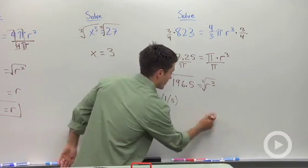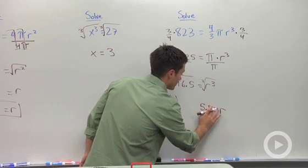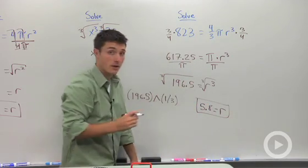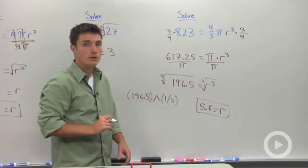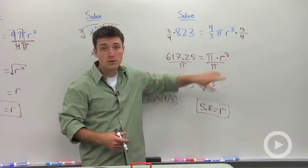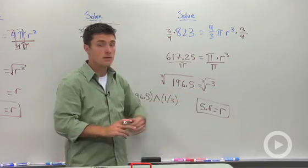So I'm going to write that a little bit over here. R is equal to 5.8. And we don't know what our units are. So we'll just leave it like that. So remember that when you're trying to solve problems with surface area, anytime something is squared, anytime something is cubed, you're going to be taking the square root or the cube root to isolate your variables.